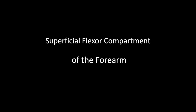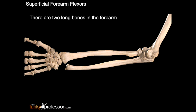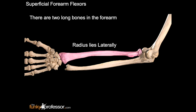Superficial flexor compartment of the forearm. The forearm is the region of the upper limb between the elbow joint proximally and the wrist joint distally. There are two long bones in the forearm: the radius lies laterally under the thumb, and the ulna lies medially under the little finger.